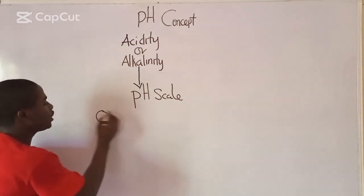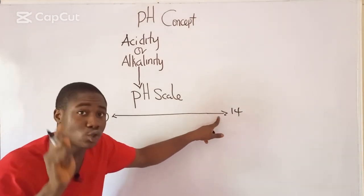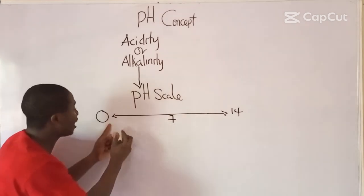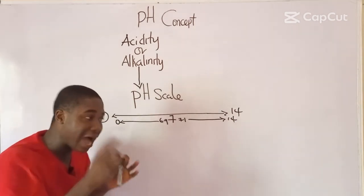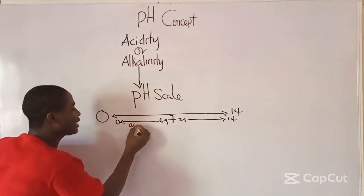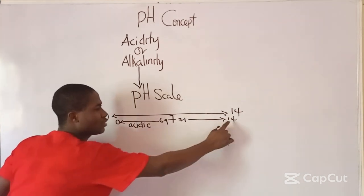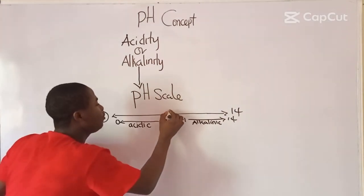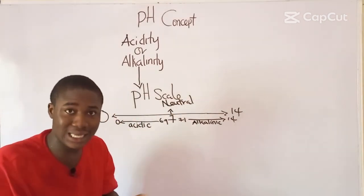The pH scale ranges from 0 to 14. At the center we have 7. When we have a value ranging from 0 to 6.9, that solution is simply acidic. If the value ranges from 7.1 to 14, the solution is alkaline or basic. When the pH is exactly 7, we say the solution is neutral — it's at the neutrality stage.